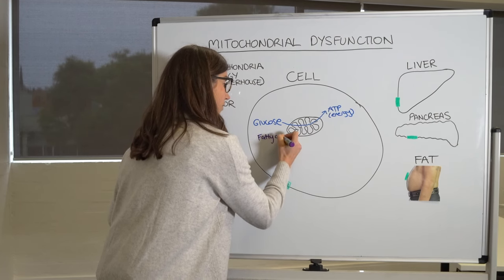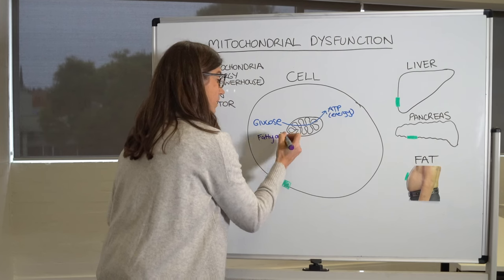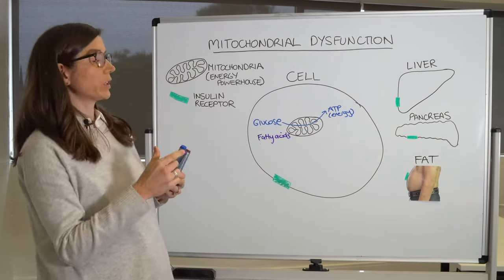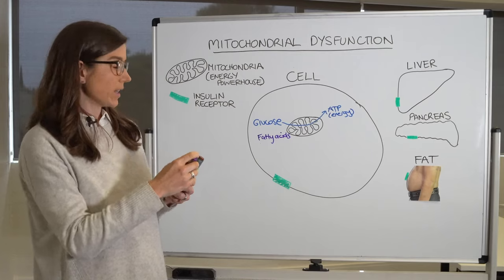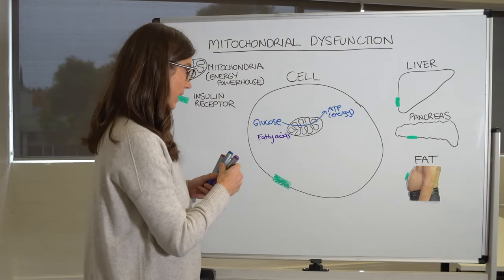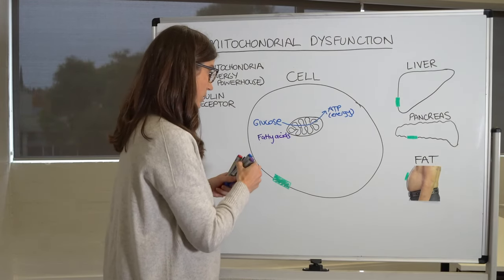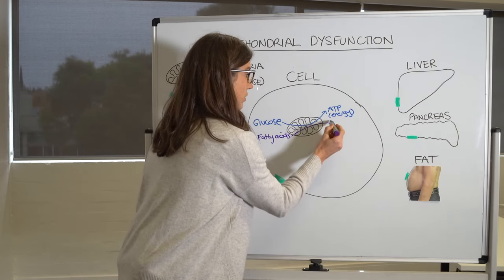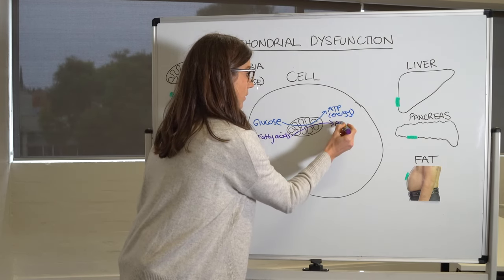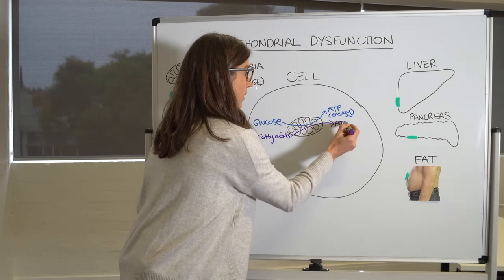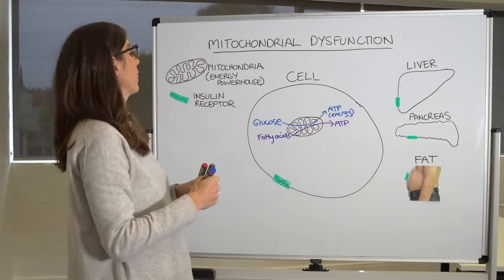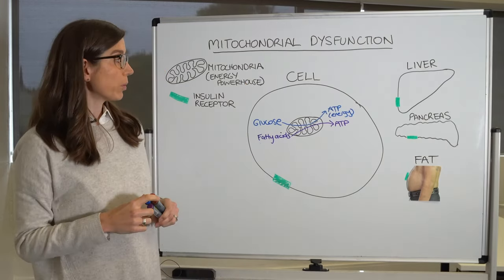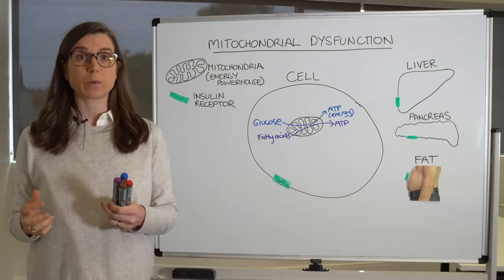Fatty acids — basically the small molecules of fat — are also able to be burned and converted into ATP for energy. So the mitochondria can process both glucose and fat to produce the energy the cell needs.